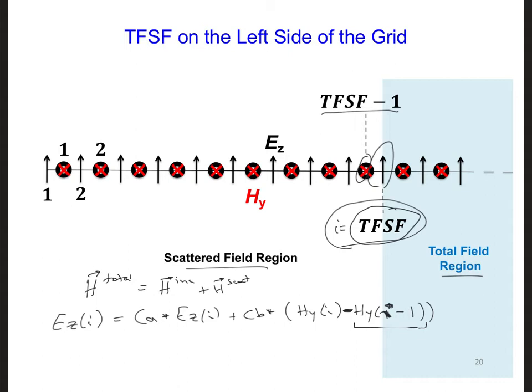After performing this regular update across the whole grid, we'll have for I equal 2 to IMAX minus 1. Now we can go in at the interface, the left interface TFSF...